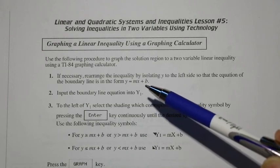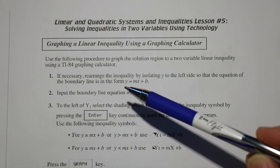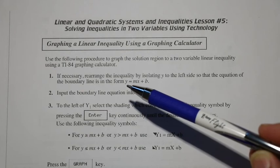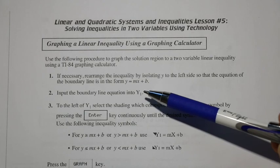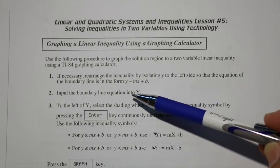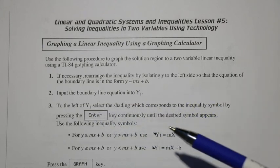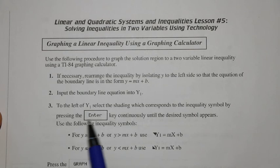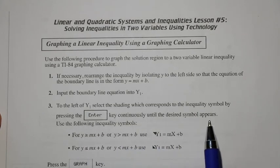We're using this form because we're talking about a linear equation or inequality. We take all the terms and rearrange to get y = mx + b. Then we go to our graphing calculator, start at y1, and input that boundary line equation into y1. Then, to the left of y1, we select the shading which corresponds to the inequality symbol by pressing the enter key, and keep pressing until the desired symbol appears.